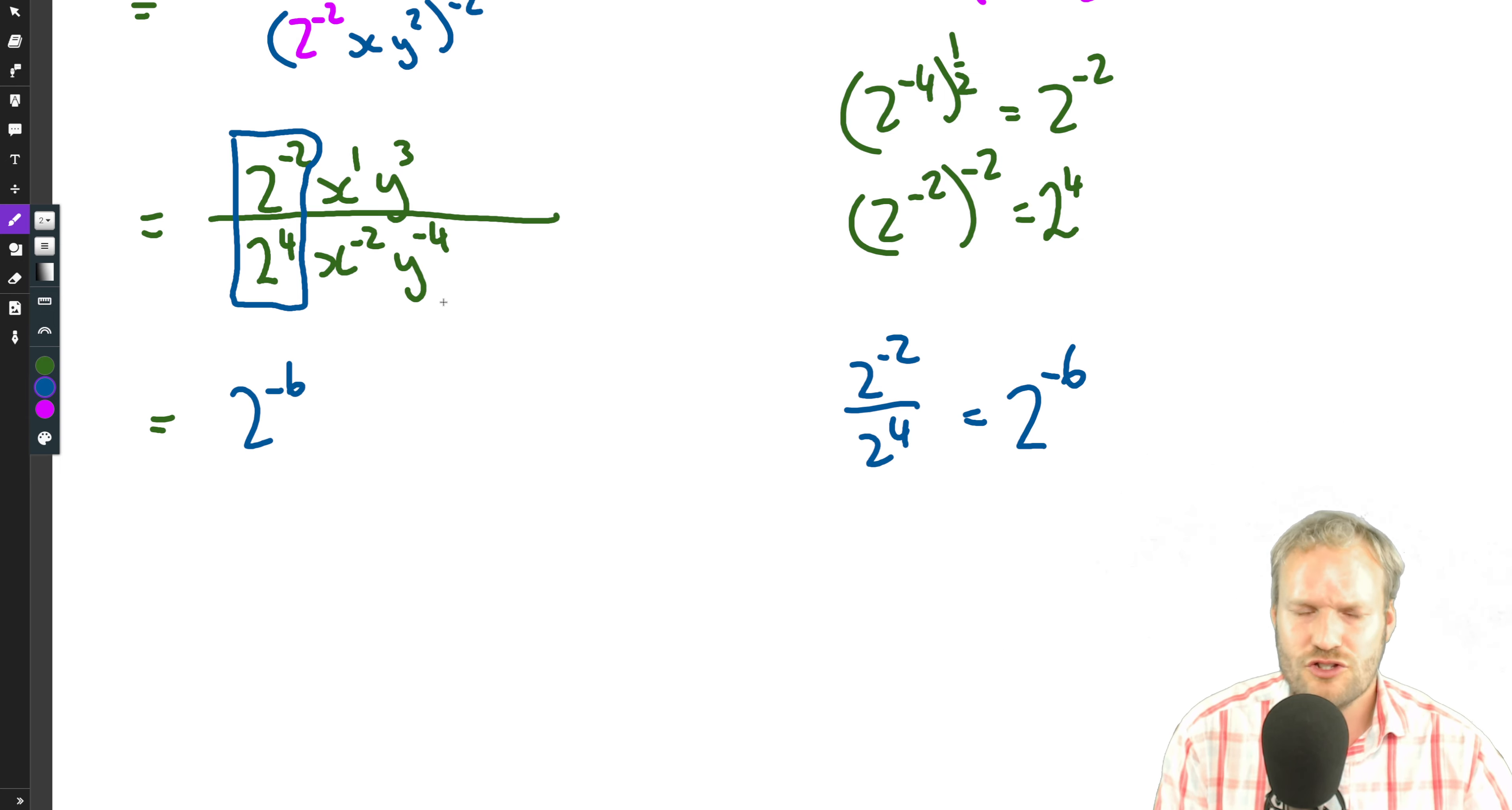And so we can keep simplifying. X to the one over x to the minus two, one minus minus two. Well, base stays the same and we subtract exponents.